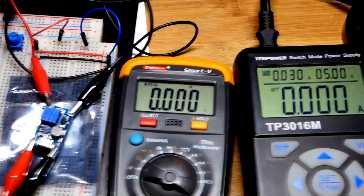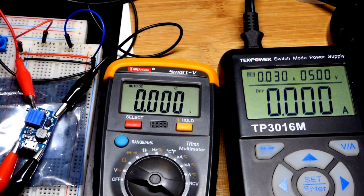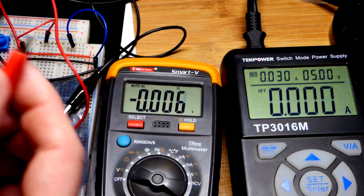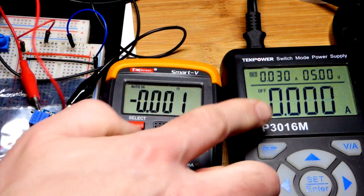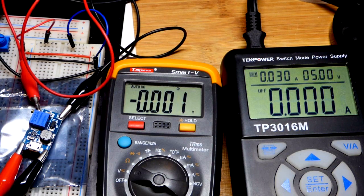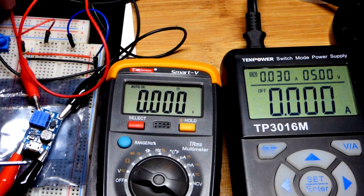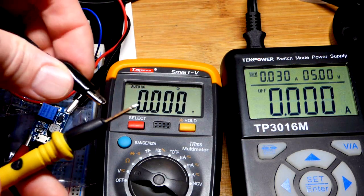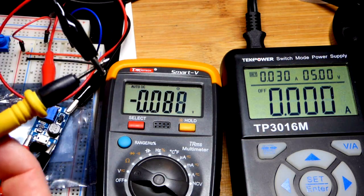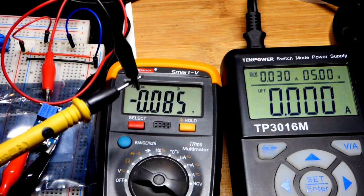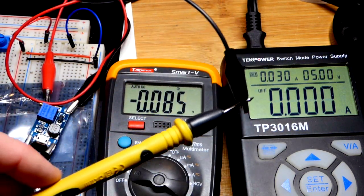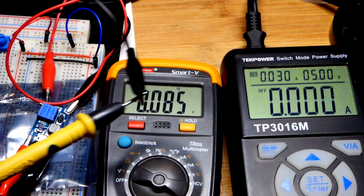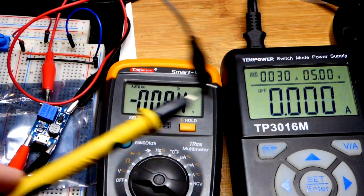It's a multimeter, setting it to measure voltage. You can see that the power supply is off. This does output a negative voltage when it is off, by about 0.6 volts.